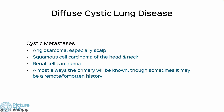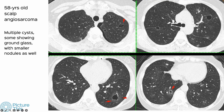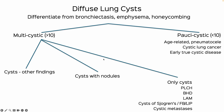Cystic metastases are straightforward — it is very rare for the underlying malignancy to be unknown. The patient will usually have renal cell carcinoma, squamous cell carcinoma, or angiosarcoma of the scalp. When we see these cysts, often with ground glass halos and sometimes other nodules, this is reasonably typical of cystic metastatic disease. So for conditions where the intervening lungs are normal, we use history, presentation, and cyst morphology to try and reach a diagnosis.